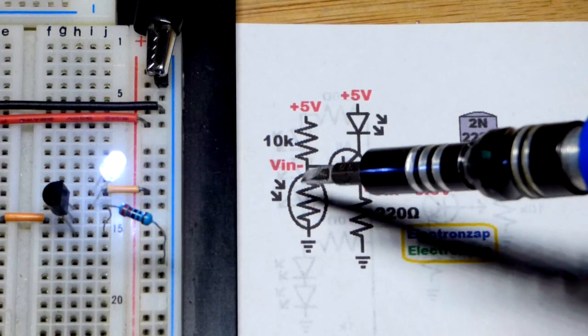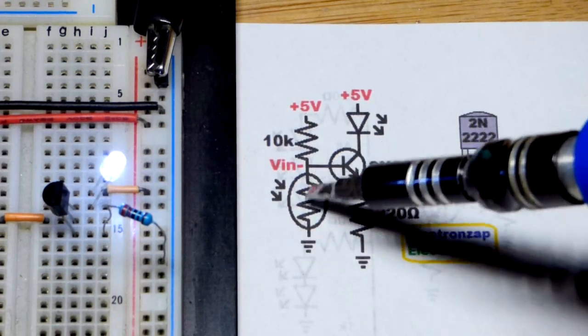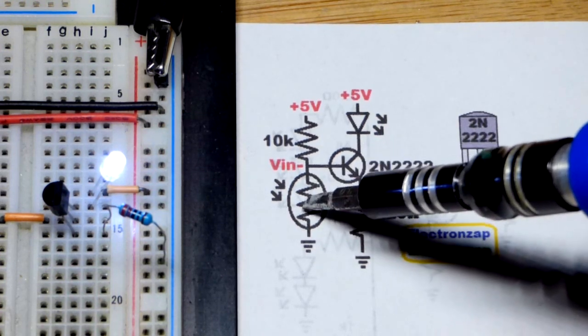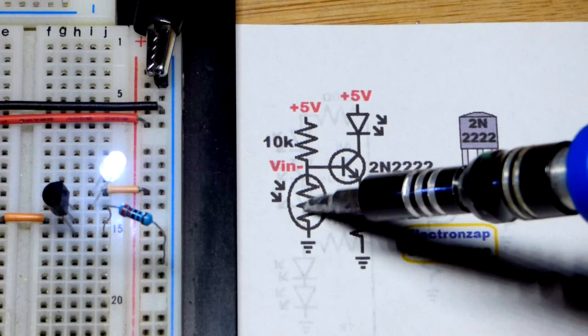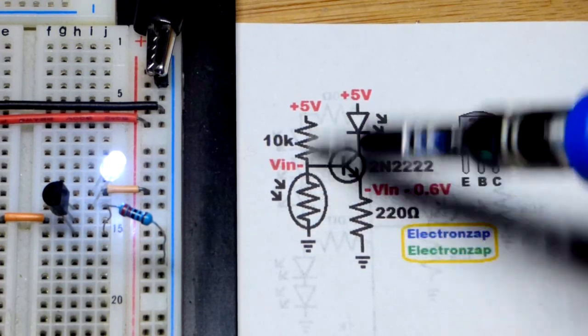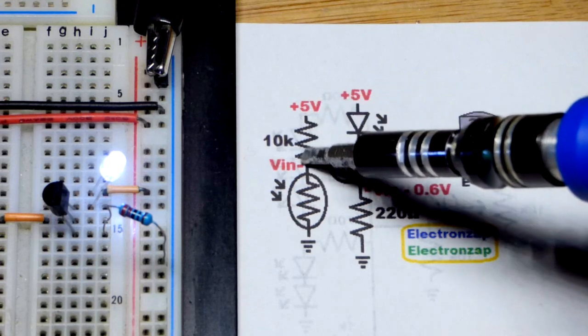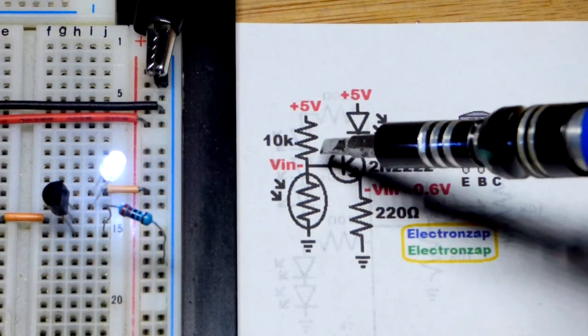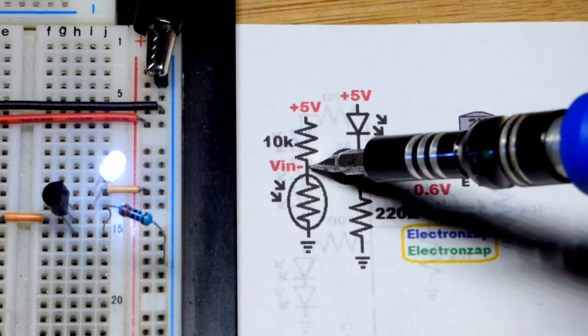When it gets bright enough, that makes a direct connection to ground for the most part—you get about zero volts. As it gets darker, the light dependent resistor has more resistance, which makes the voltage rise. It has a better connection to five volts, so that changes. Now that's the base voltage there—it changes with light.